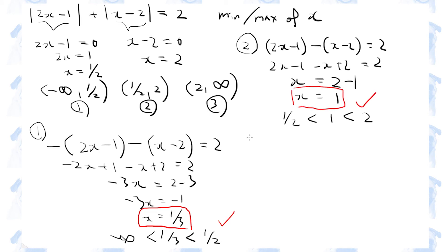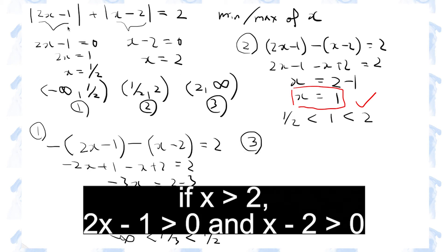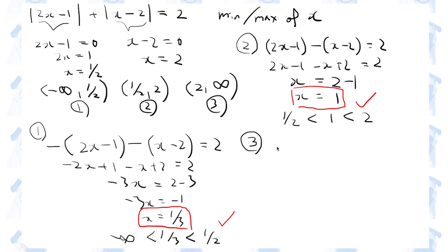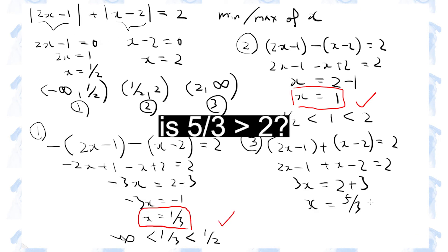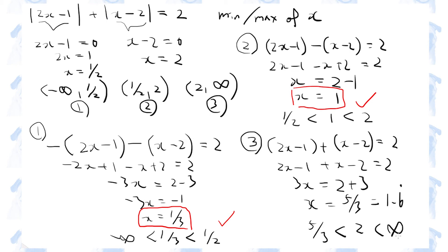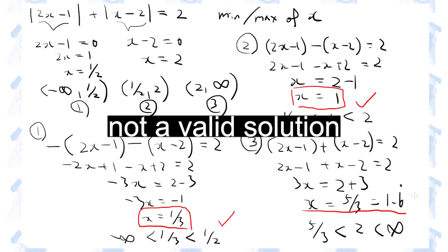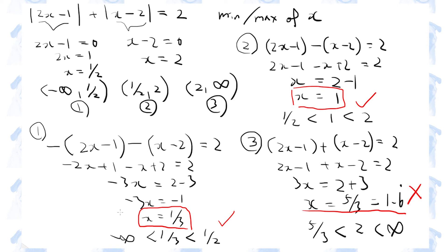And finally, let's check the third interval. When x is greater than 2, both of these expressions become positive, so we don't need to add any negative signs. 5 over 3 is 1.6. 5 over 3 is outside this interval, which means that this is not a solution. So this is the minimum value of x, and this is the maximum value of x.